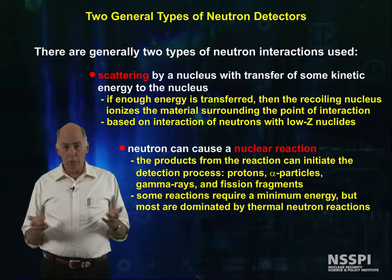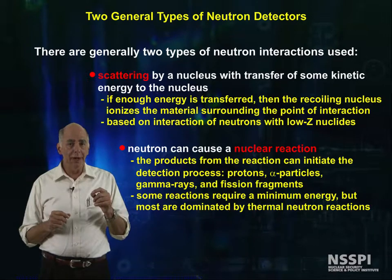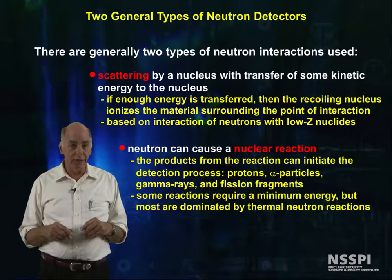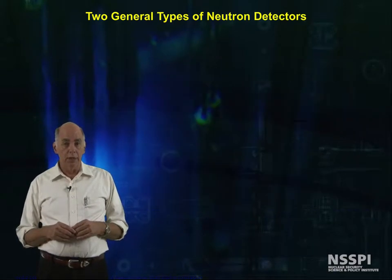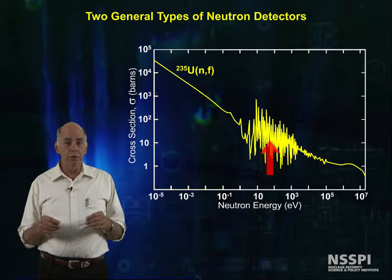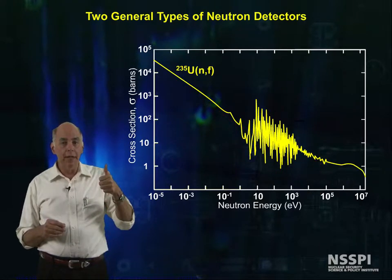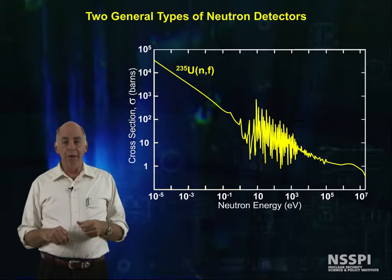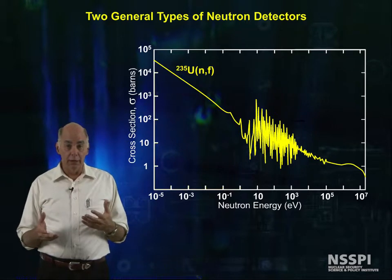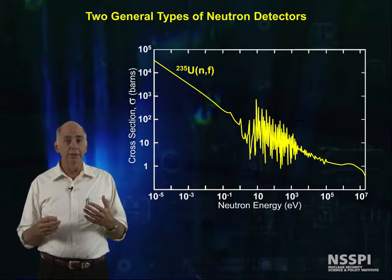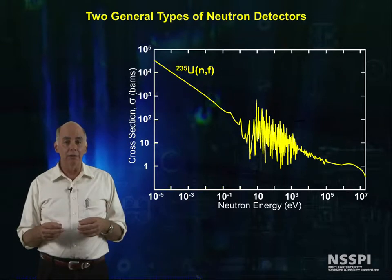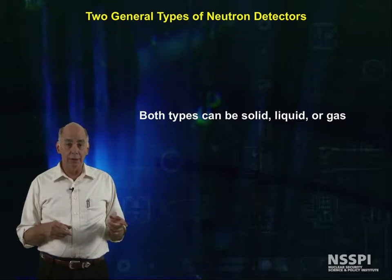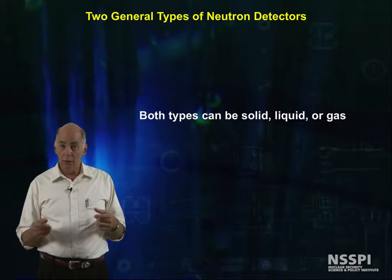Some reactions require a minimum neutron energy, but most of the reactions that we use in neutron detectors are based on thermal neutron reactions. In general, the cross section for nuclear reactions goes up as the energy of the neutron goes down. If there are fast neutrons that we are trying to detect, then the strategy, often, is to thermalize them so that they can interact with our detector. Both fast and thermal neutron detector materials can be solid, liquid, or gas.